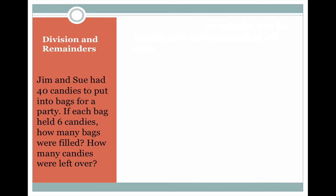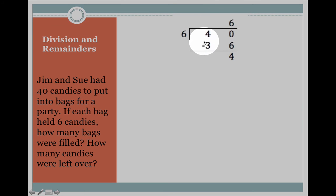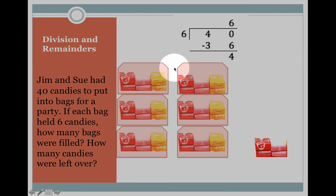Jim and Sue had 40 candies to put into bags for a party. If each bag held six candies, how many bags were filled? And how many candies were left over? Here is the division question. We'll start by putting six in each bag. Six times six is 36. We subtract that. We get a remainder of four. You can see that six bags are filled and four are left over.